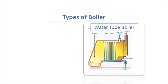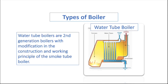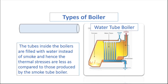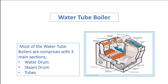The water tube boiler is a second generation boiler with modifications in the construction and working principle of the smoke tube boiler. The tubes inside the boiler are filled with water instead of smoke, and hence the thermal stresses are less compared to those produced by the smoke tube boiler. Most water tube boilers comprise three main sections: the water drum, steam drum, and the tubes.